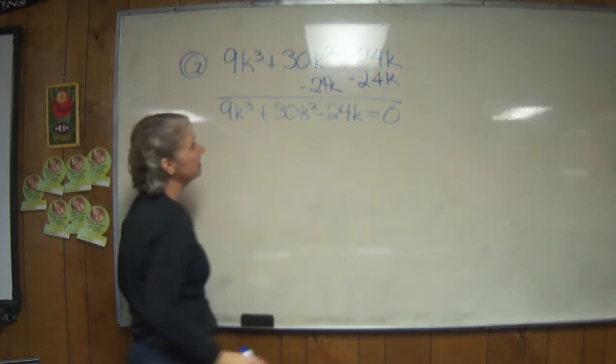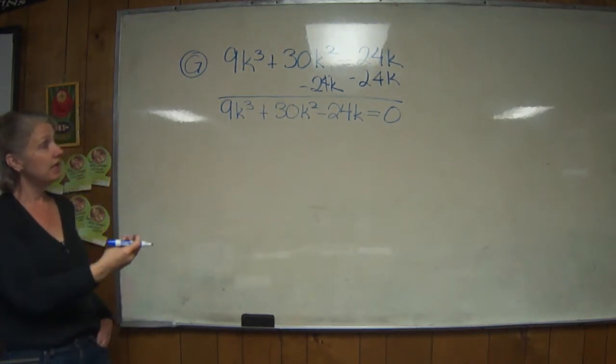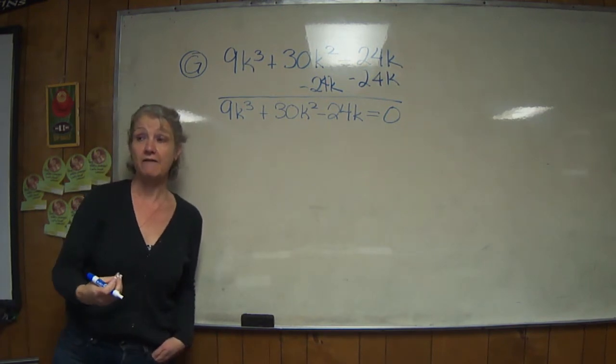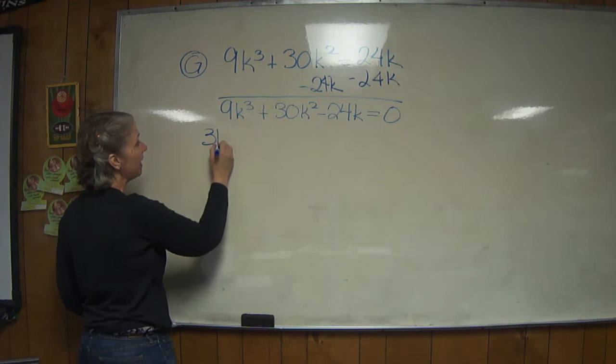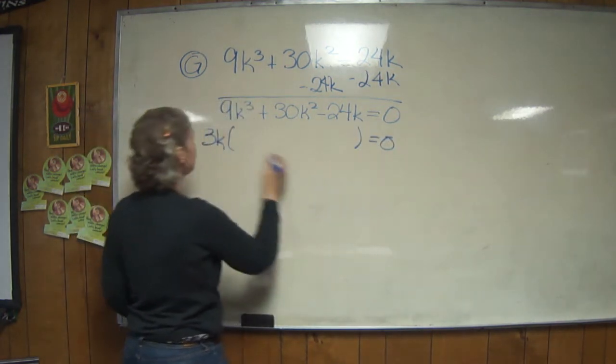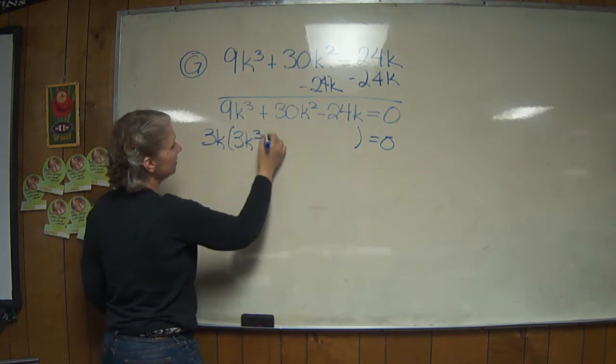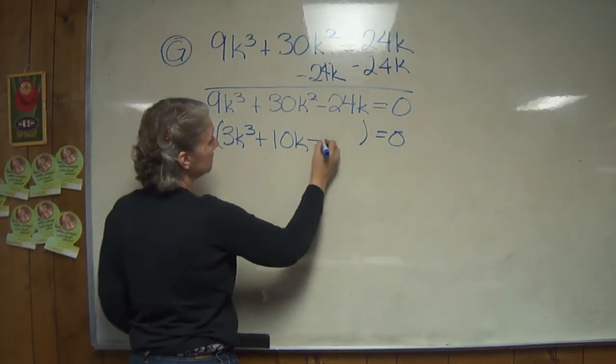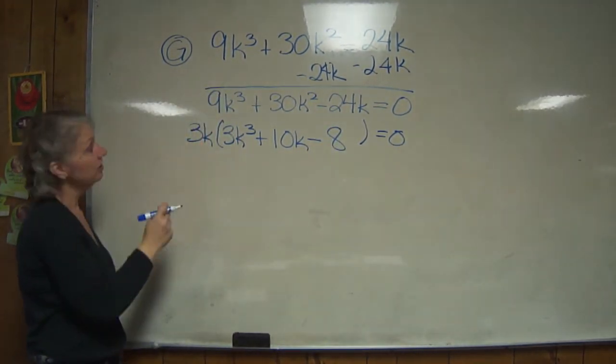Now let's find a common factor. What do 9k³, 30k², and 24k all have in common? They all have 3k in common. So let's pull out that factor. This would have 3k(3k² + 10k - 8). So now we have one factor.